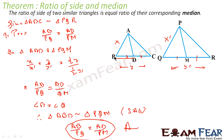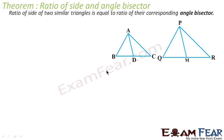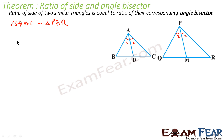Here we have to prove that the ratio of sides of two similar triangles is equal to the ratio of their angle bisectors. Two triangles are similar — triangle ABC is similar to triangle PQR. Angle 1 in one triangle equals angle 1 in the other, and angle 2 equals angle 2. We have to prove that AB by PQ is equal to AD by PM, where AD and PM are the angle bisectors.